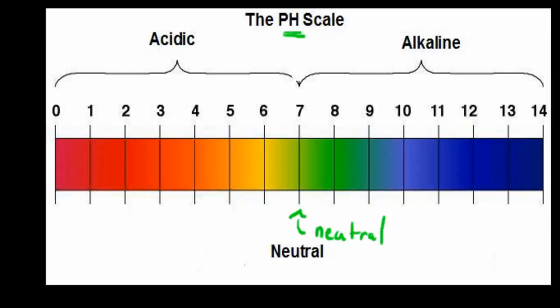Anything below 7 is acidic. Anything above 7 is basic, or another word for basic is alkaline. You might see basic sometimes, sometimes it's called alkaline. They're both the same thing.